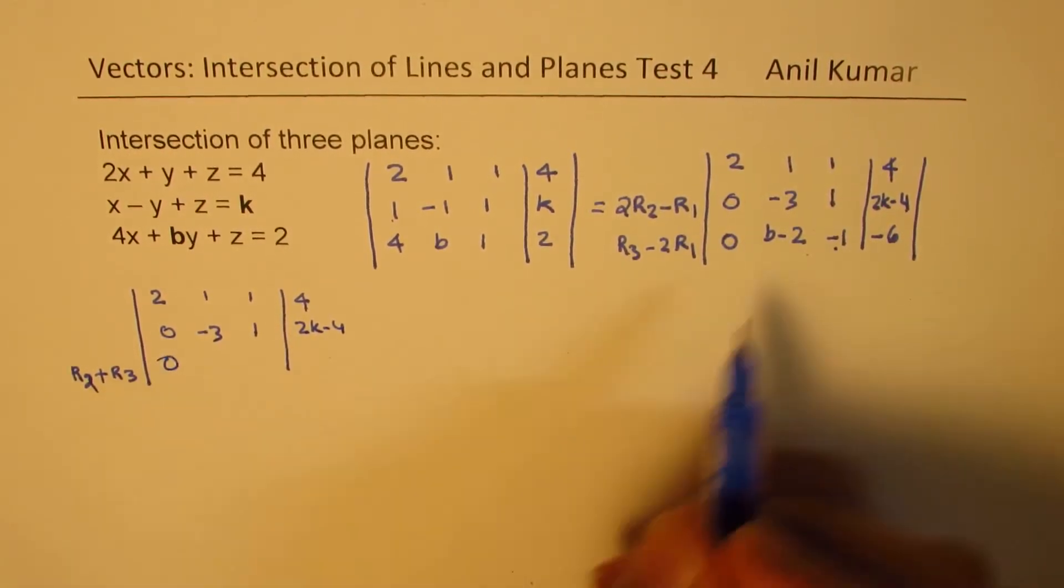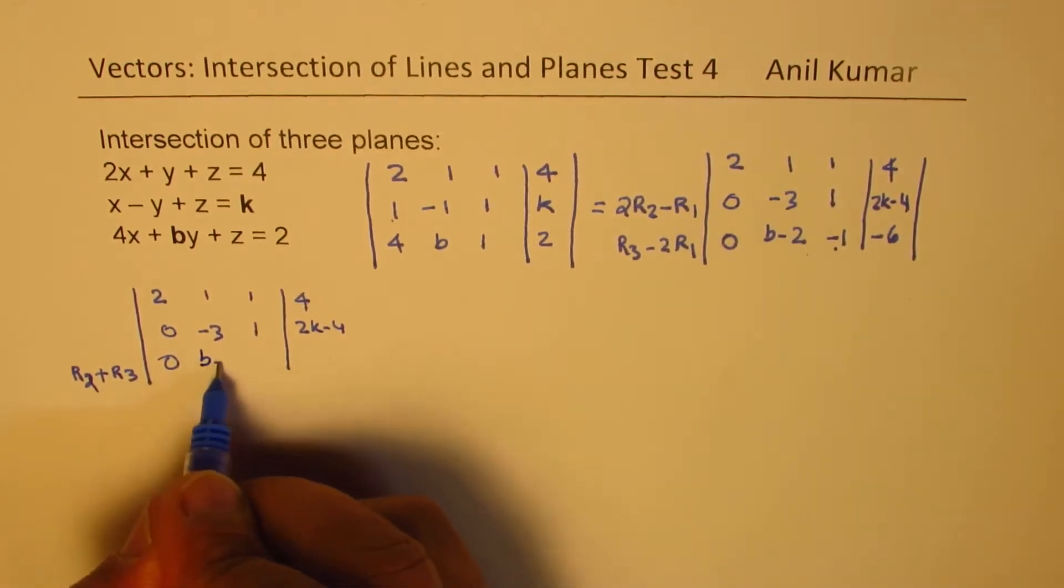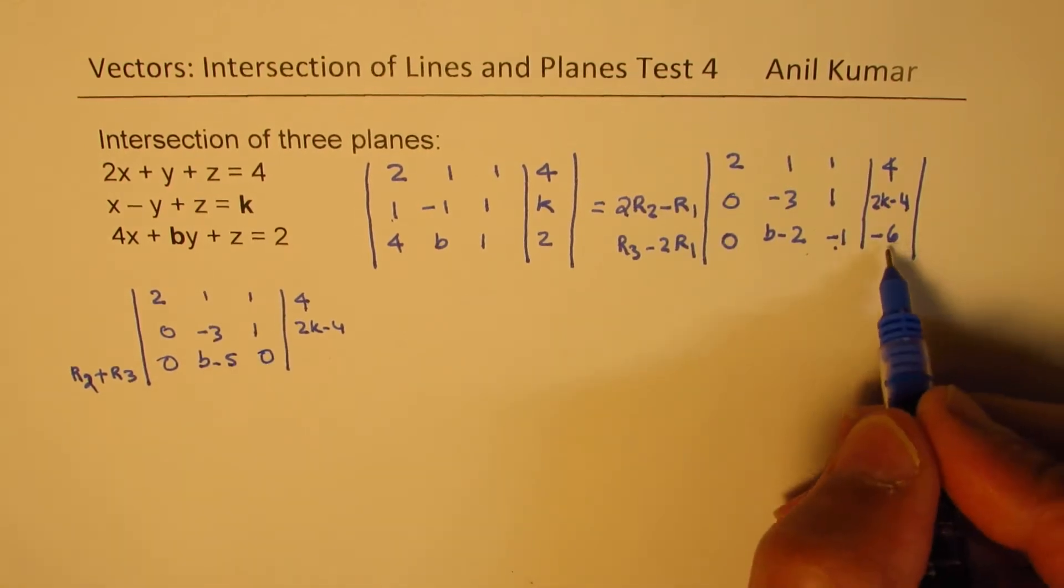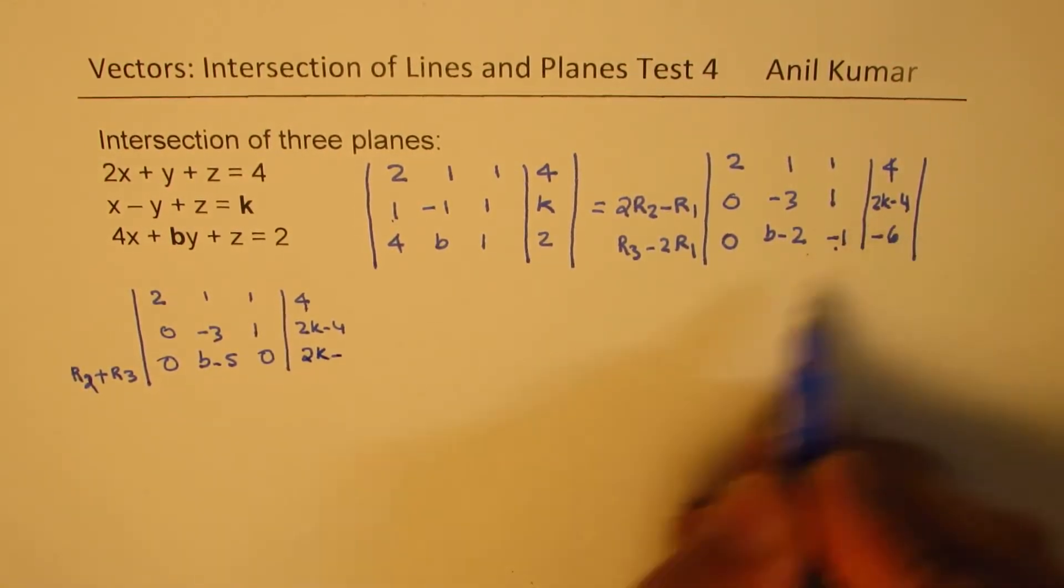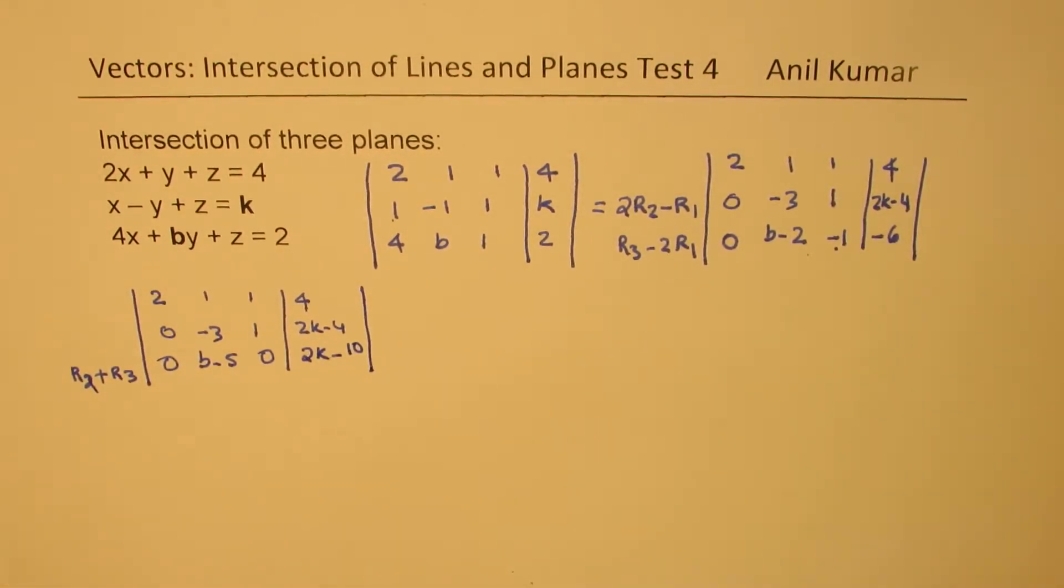So we maintain this as 2k minus 4. Here when we add, we get b minus 2 minus 3, which is b minus 5. And when you add these two, you get 0 here, add these two, we get 2k minus 10. So that is what it is.